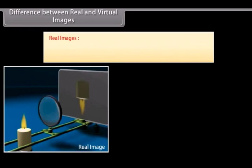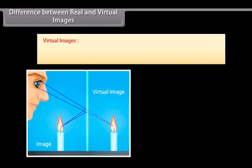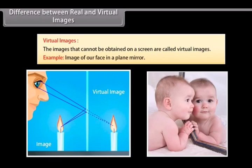Difference between real and virtual images. Real images: the images that can be obtained on a screen are called real images. Example: images formed on a cinema screen. It is formed by a concave mirror. Virtual images: the images that cannot be obtained on a screen are called virtual images. Example: image of our face in a plane mirror. It is formed by a concave lens.